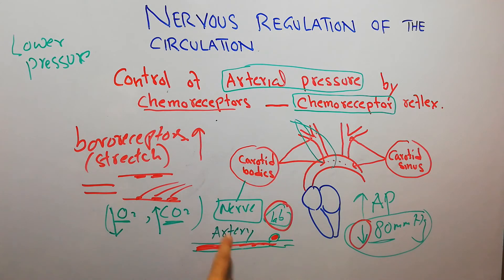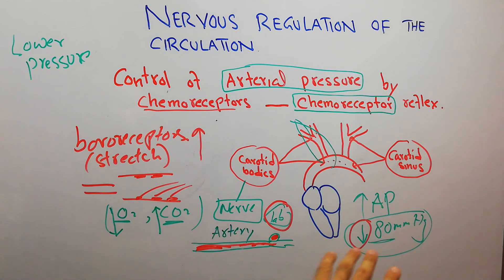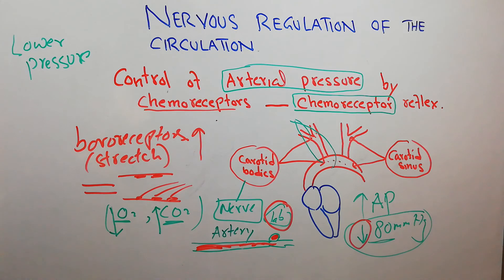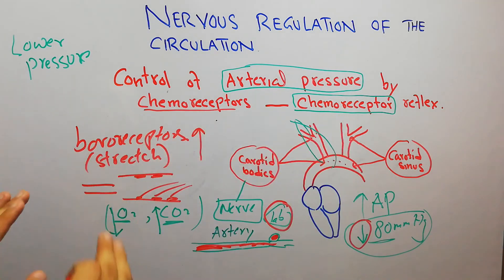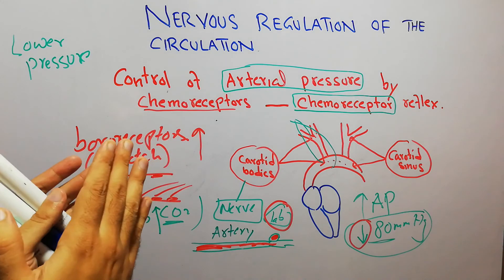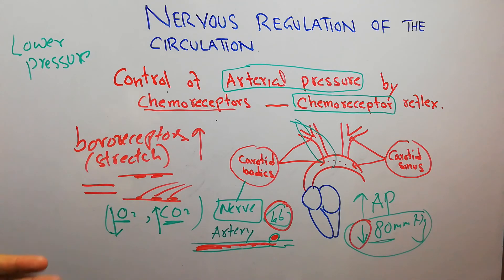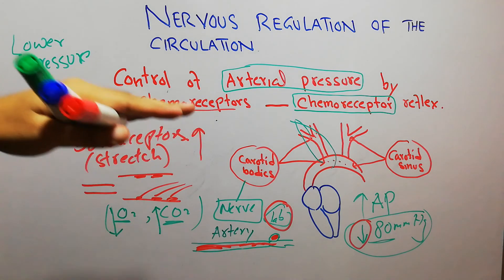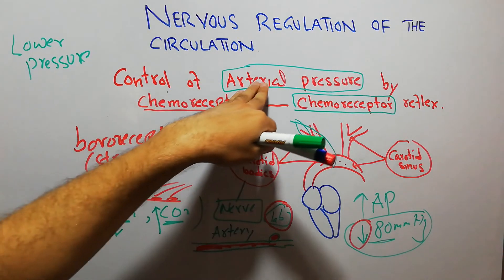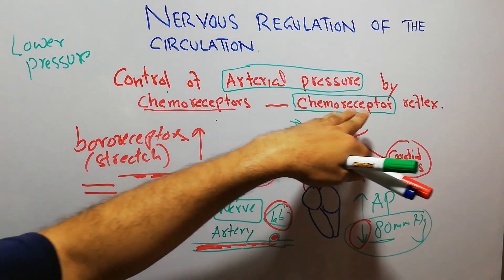The chemoreceptors are also specially supplied with a nerve which carries signals from them to the brain. When the level of oxygen decreases and the level of carbon dioxide increases — which normally happens at low arterial pressure — the chemoreceptors get activated and send signals to the brain, which then sends signals to increase the arterial pressure. It is important to differentiate chemoreceptors from baroreceptors: baroreceptors are stretch receptors activated by stretch of blood vessels at increased arterial pressure, while chemoreceptors are specially a low-pressure system, though both play a role in maintaining arterial pressure.